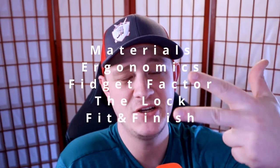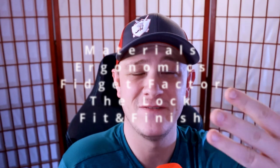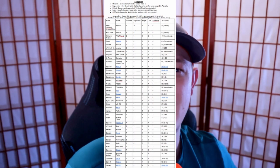Here's how Grail or Garbage works. We've got five categories: materials, ergonomics, fidget factor, the lock, and fit and finish. Each of those categories is worth a max of 10 points. At the end of ranking each category, we will add up the total and put it on our leaderboard. By the time we're done, you'll finally know: Is the Benchmade Shootout a grail or is it garbage?